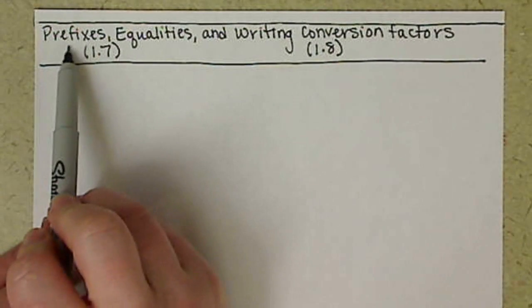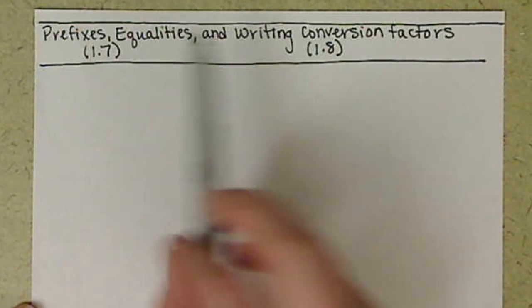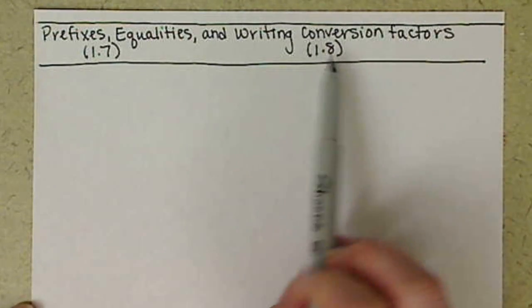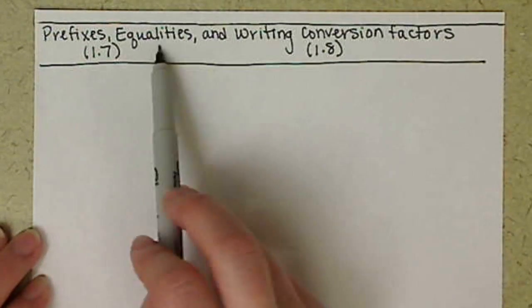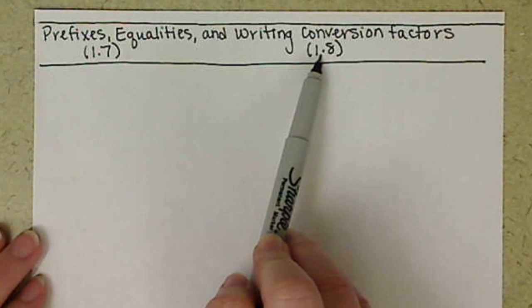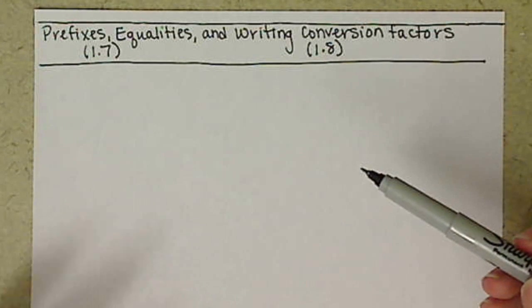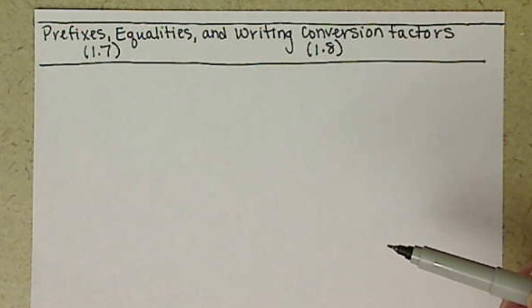For this video we're going to be talking about prefixes as well as writing equalities and conversion factors. I consider equalities and conversion factors the same thing. Your book separates them out into two different concepts, but in reality they really are the same thing. So I'm combining section 1.7 with 1.8. I'm actually going to also incorporate some simple components from section 1.9. I will also have another video explicitly talking about section 1.9, where the bulk of our calculations will be.